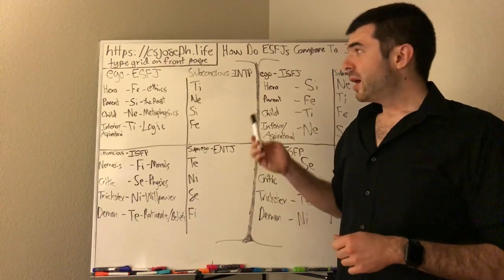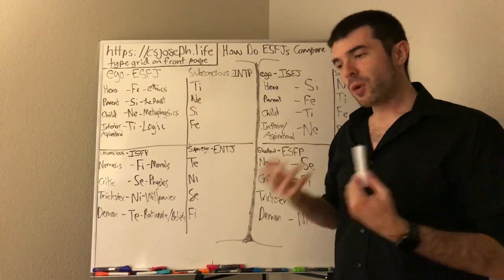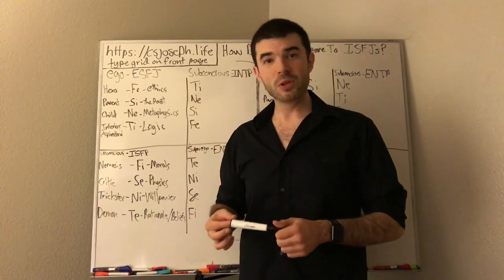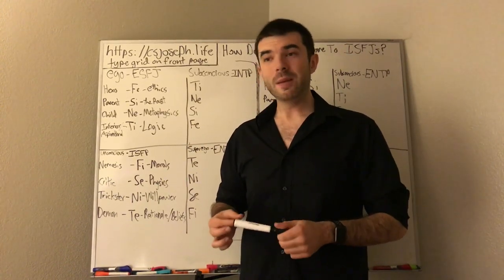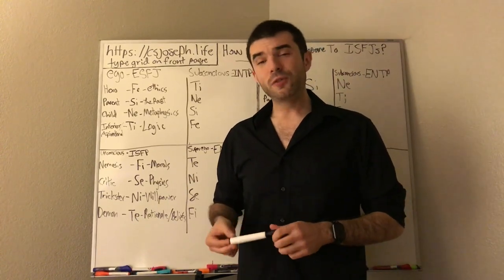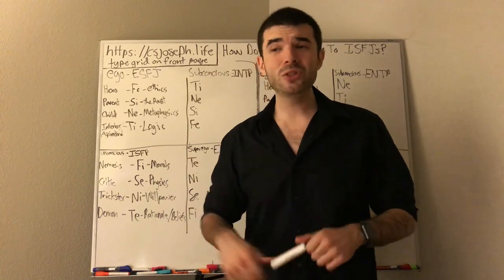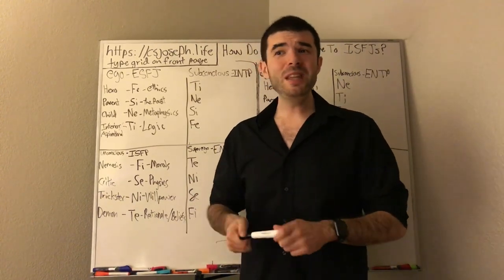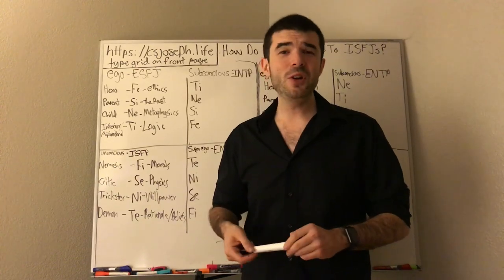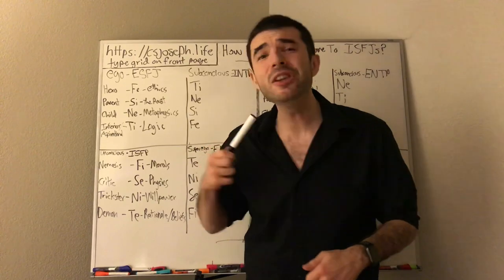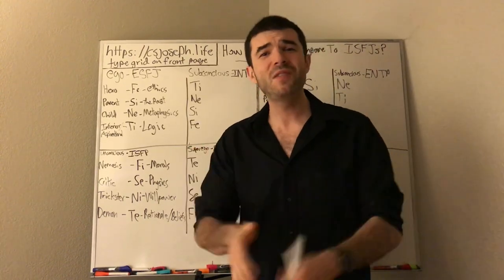SFJs being that ISFJ is my subconscious. I love talking about them in all the positive and negative ways I possibly can. So anyway, FE hero all about how other people feel they walk in the room, they know how everyone feels they're very ethical, social norms are everything to them. SI parent makes them very justice oriented, very dutiful. And the point where ESFJs are forcing other people to go on family outings, family traditions.